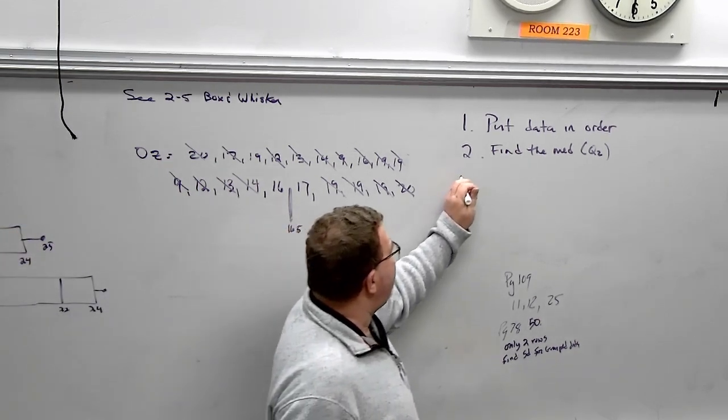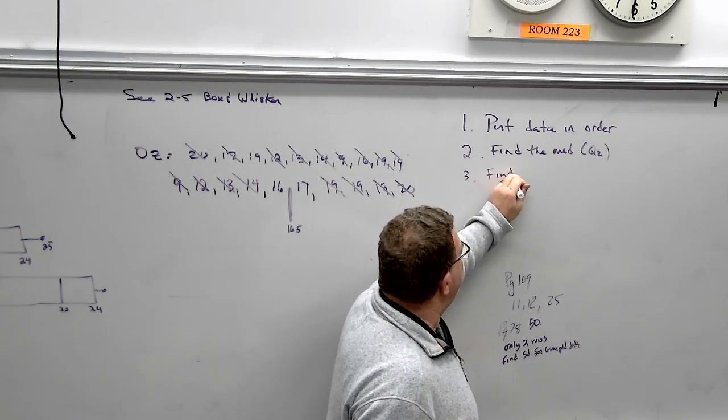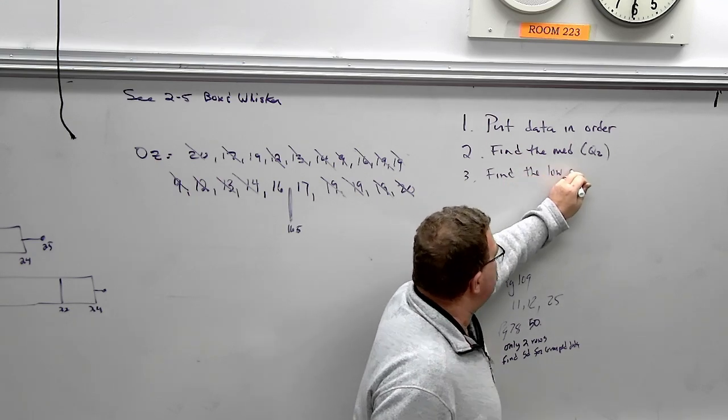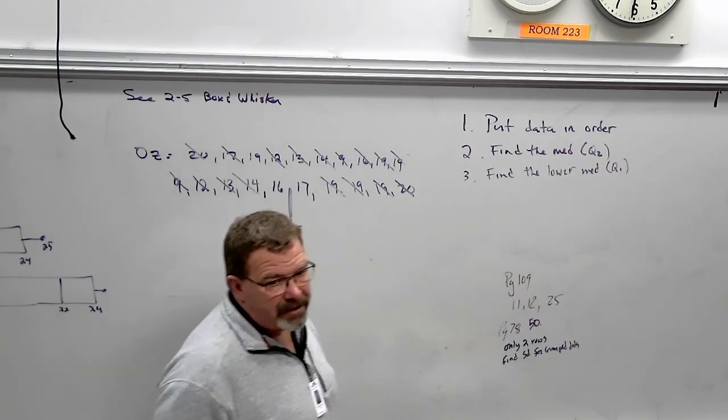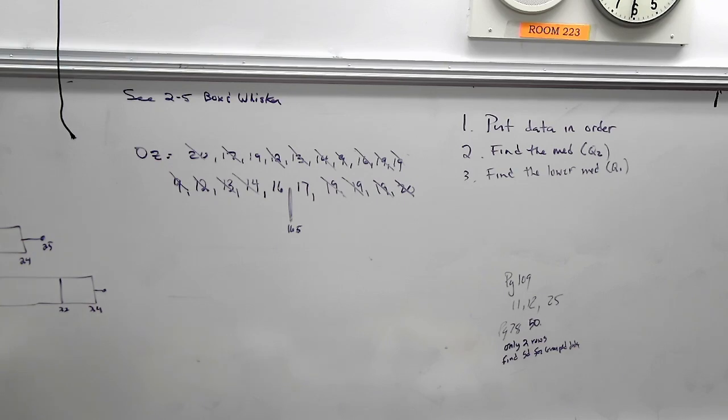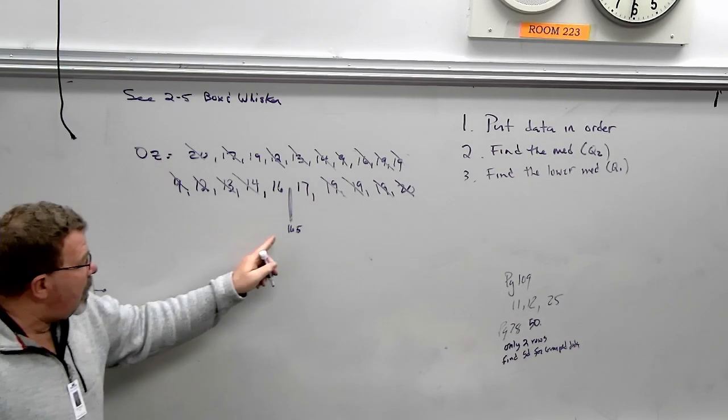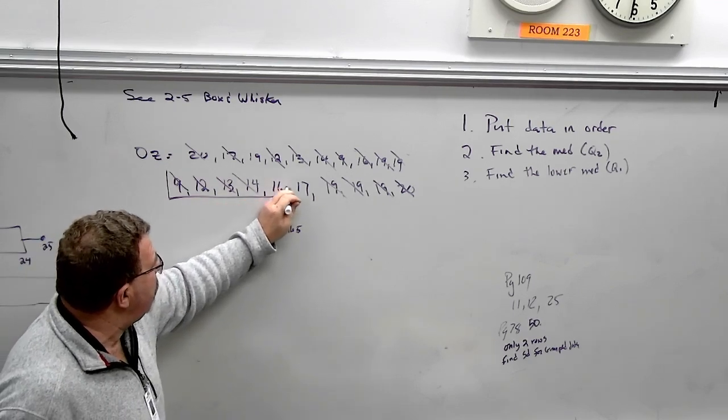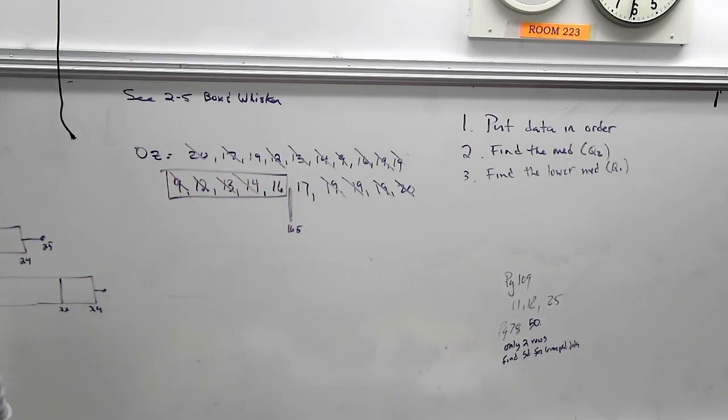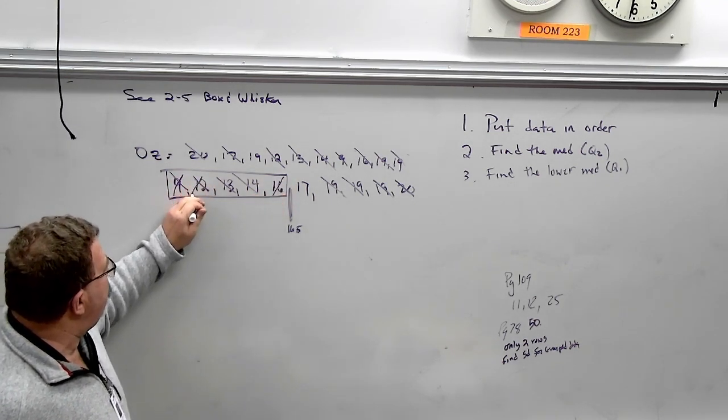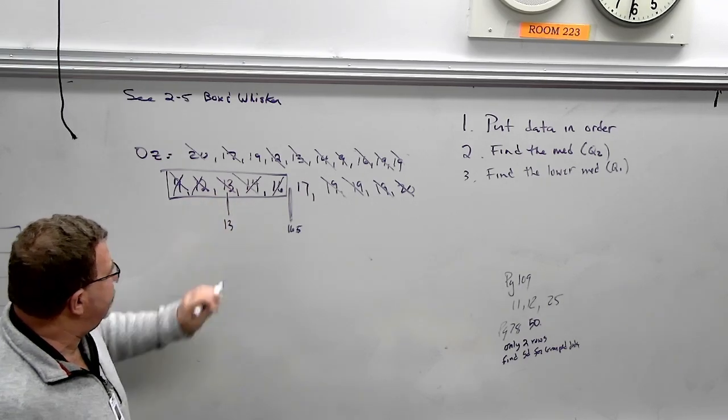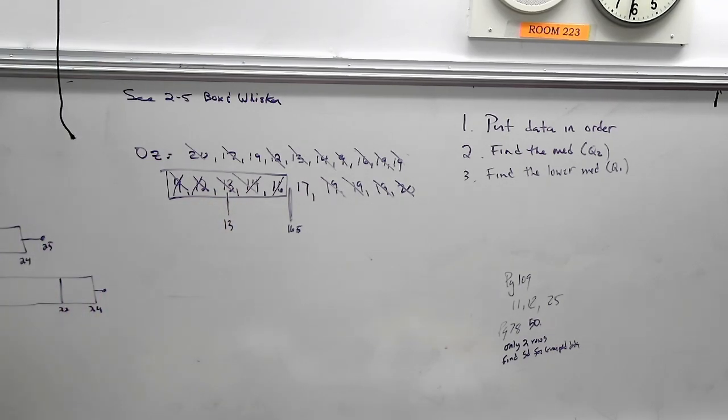Step three, you are going to find the lower median. The lower median. This is referred to as Q1, quartile 1. So you always have to find the median first. Now, here's what I like to do. I just put a box around all the numbers less than 16.5. Anything that falls below 16.5 goes into that box. Now, we just find the median again. Here we go. Nine crosses off. 16, 12, 14. I'm left with 13. So there's my lower median, quartile 1.